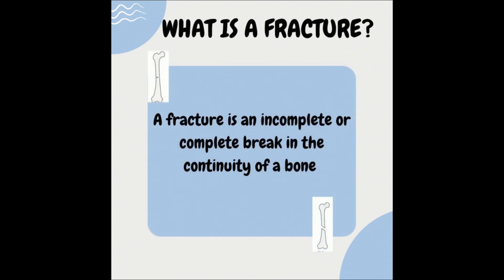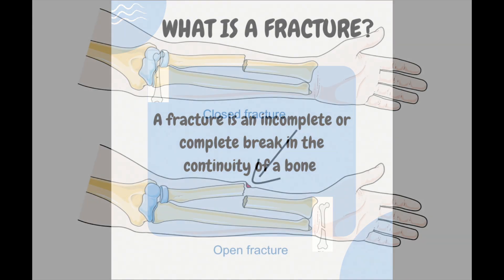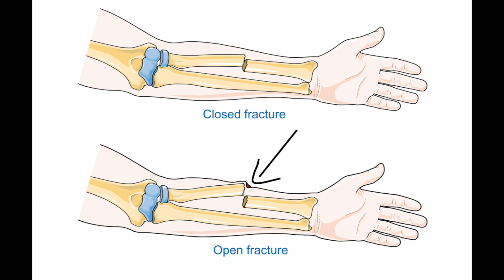A fracture is an incomplete or complete break in the continuity of a bone. A fracture can be open or closed. An open fracture is when there is a break in the continuity of the skin along with the continuity of the bone, causing the fracture to communicate with the environment outside of the body. A closed fracture is when there is no break in the continuity of the skin.